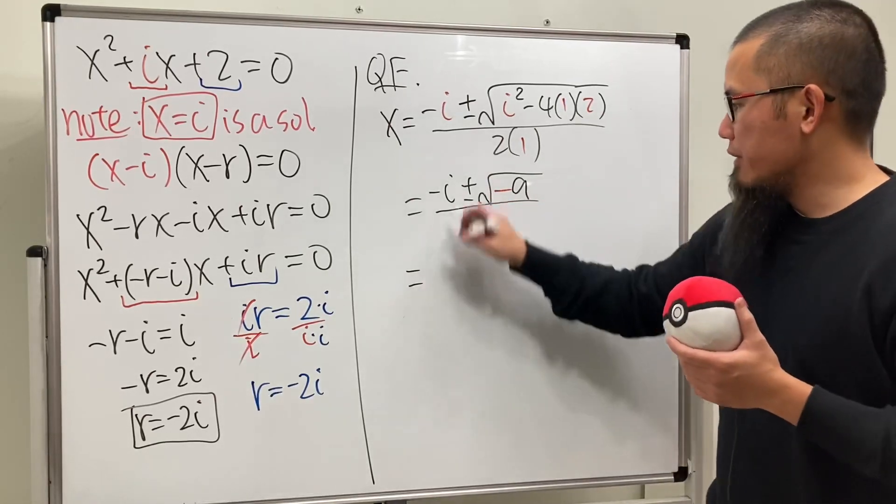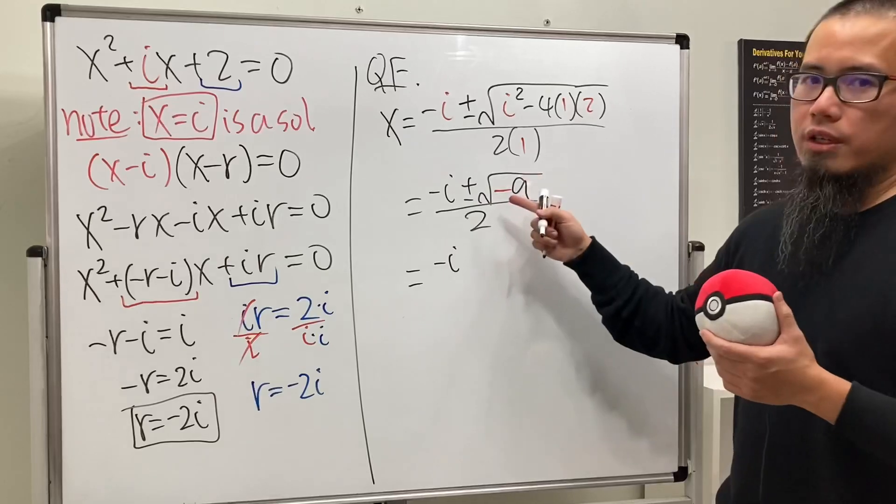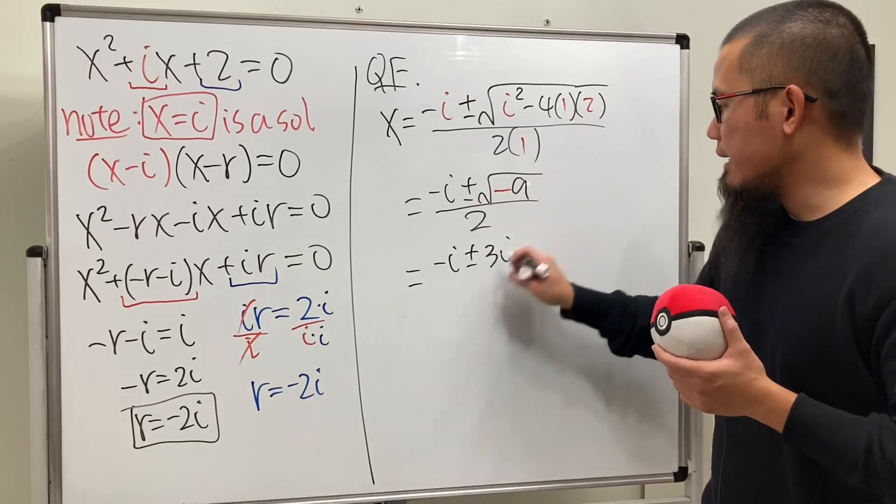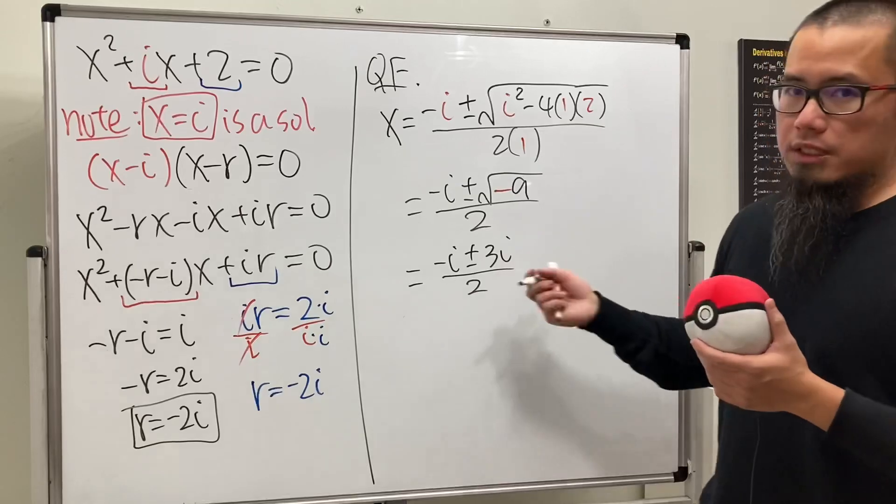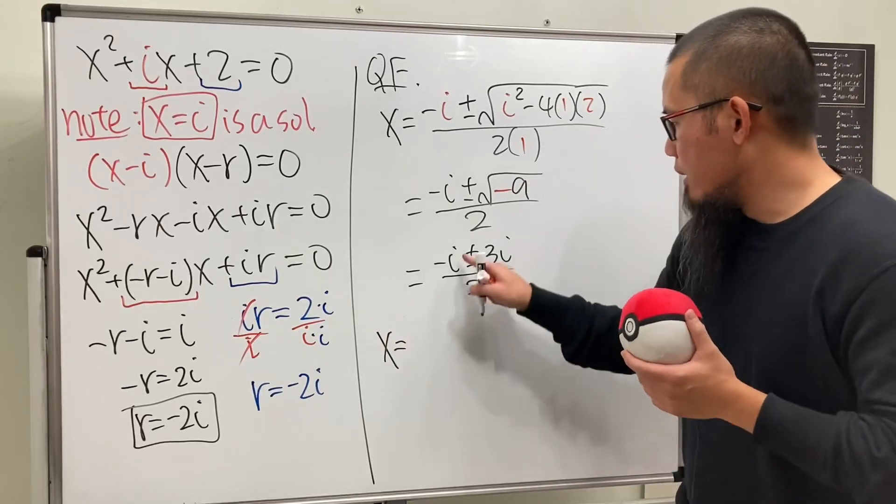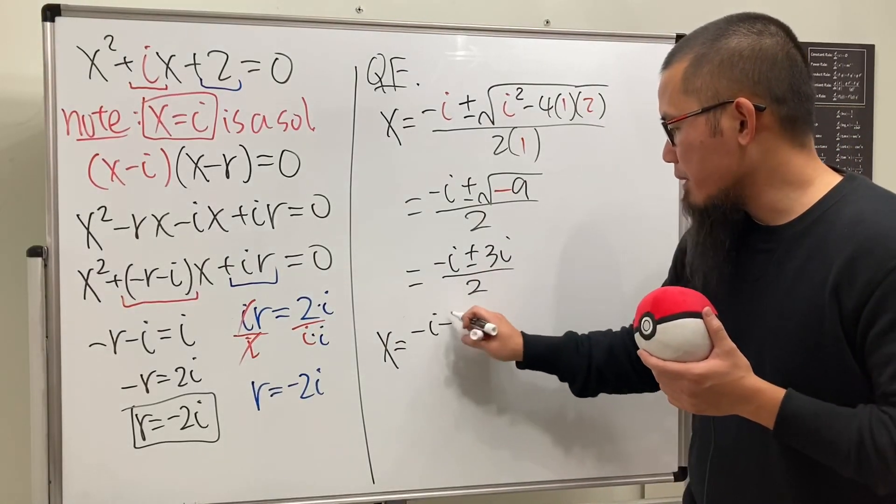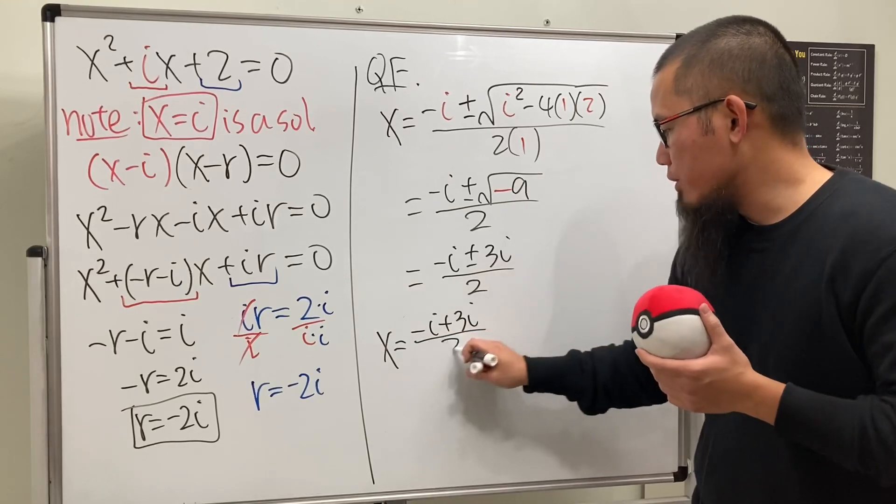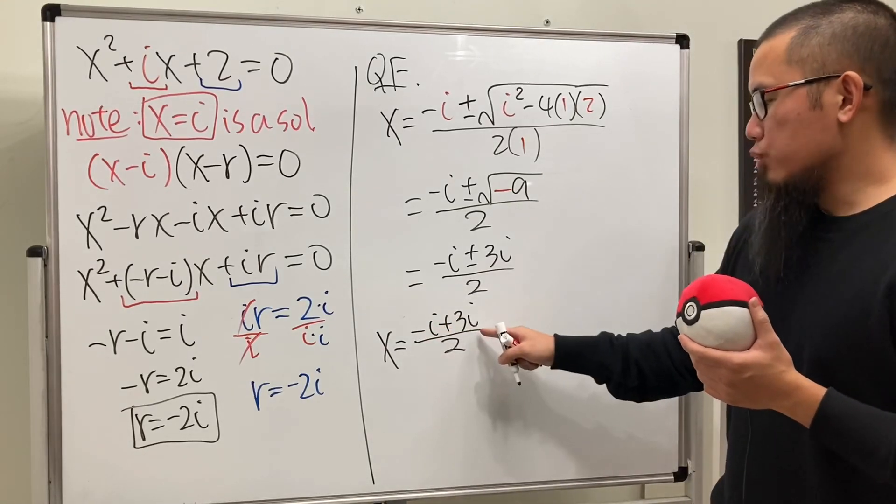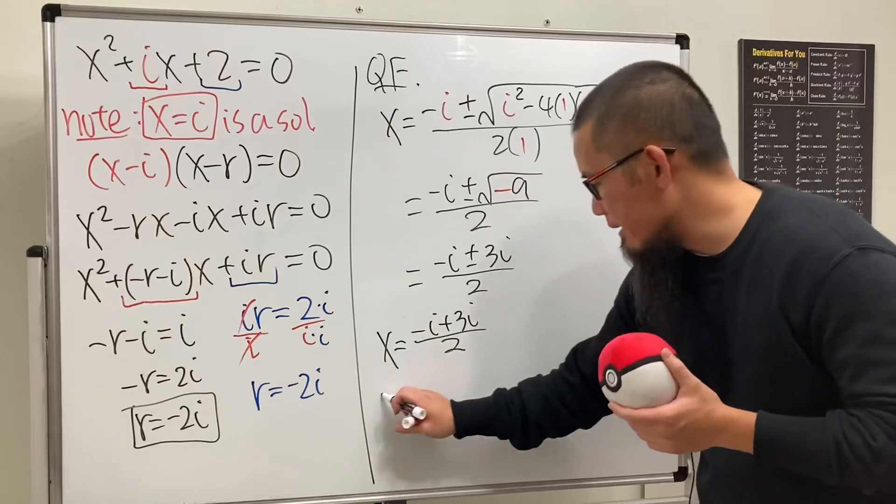So here we have negative i, and this is just 3i. So we have plus or minus 3i, all over 2. So x equals, let's do the plus first. Negative i plus 3i, all divided by 2. On the top it's just 2i. Divided by 2, we get i. So x equals i.